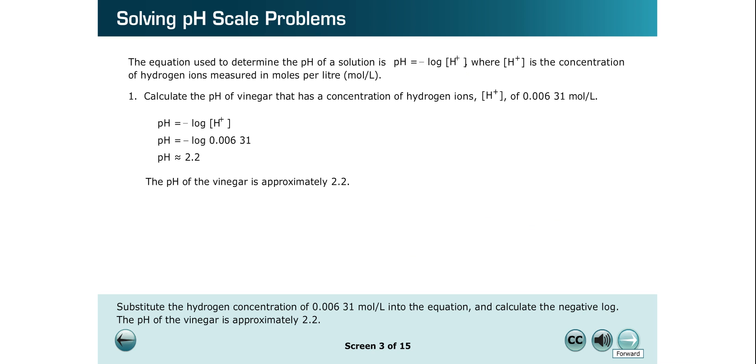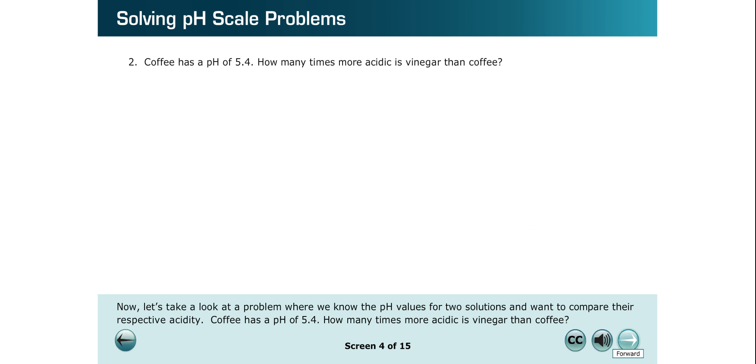Now, let's take a look at a problem where we know the pH values for two solutions and want to compare the respective acidity. Coffee has a pH of 5.4. How many times more acidic is vinegar than coffee?